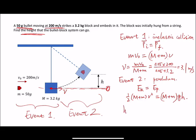So we will have the h equals to v squared over 2g. So if we plug in the velocity we find from event 1 divided by 2 times 9.8, we will have the height equals to 0.49 meters.